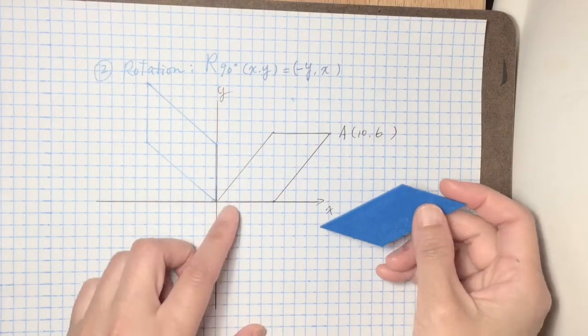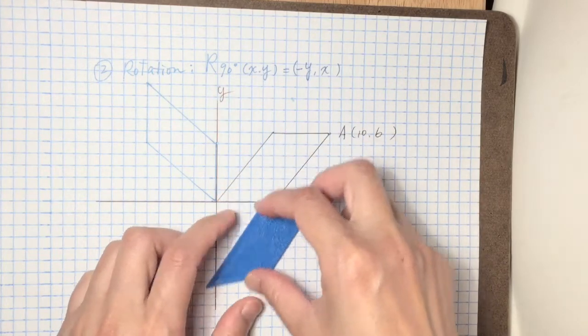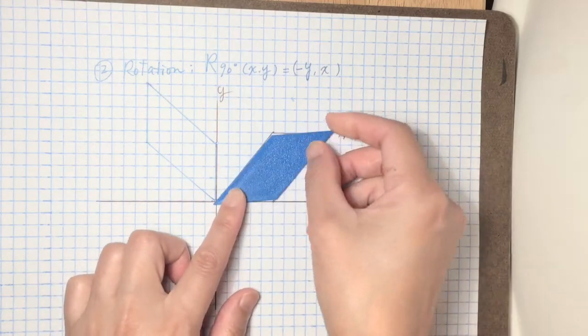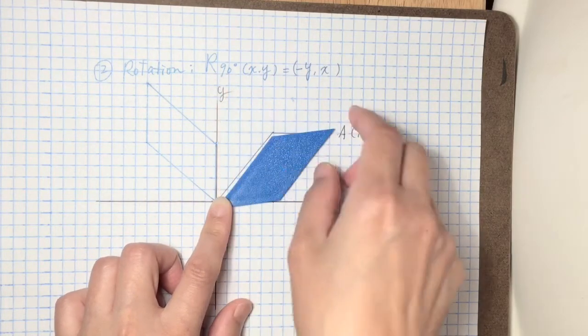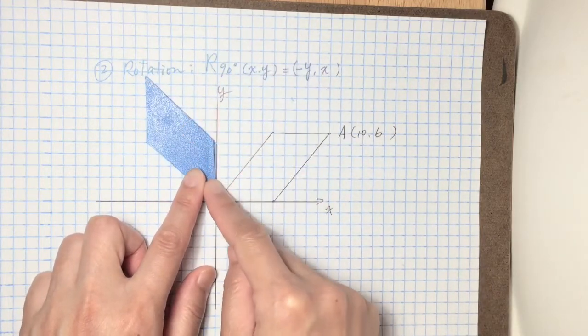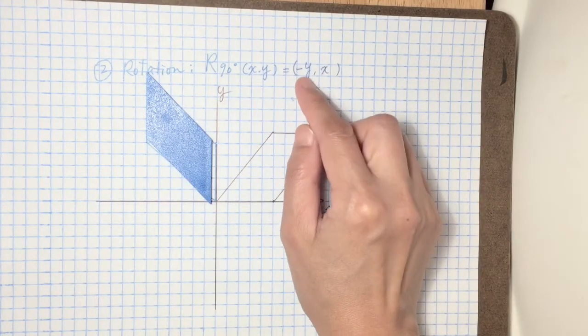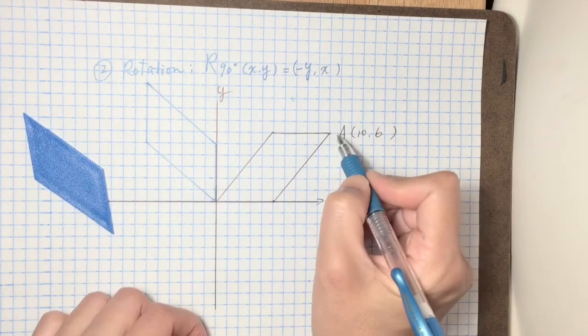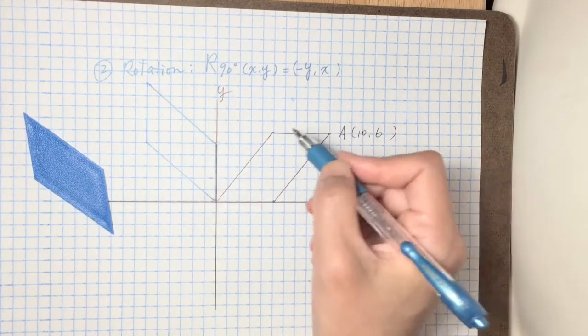About the rotation, if I have a parallelogram this direction and for example this point is eight, ten, six, so if I rotate counterclockwise 90 degrees to this new image, then you have to flip the X and Y and you have to add the negative in front of the new point. If I say that A is ten and six in this case, then here A point change into negative six and ten.